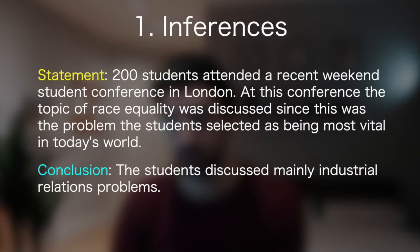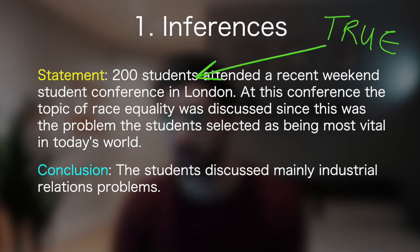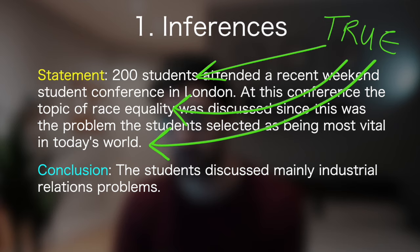So for the example given, I'd read it as: it is true that 200 students attended a recent weekend student conference in London. It is true that at this conference, the topic of race equality was discussed. And it is true that this was the problem the students selected as being most vital in today's world. The reason for this is that you have to assume all this stuff in the statement is true, and going through this process of reaffirming the truth will make sure you've got it solidly in your mind before you answer the next section.